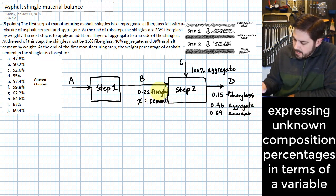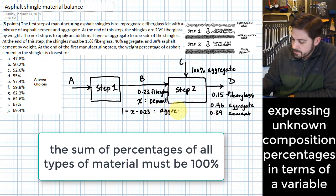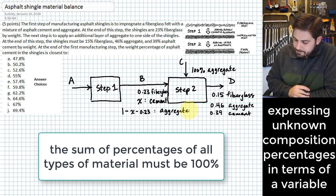And then lastly, we have aggregate that we should have coming into our second step. And what's interesting is that doesn't actually introduce a new variable because we have to have a hundred percent flowing in, this has to sum up to a hundred percent. So for that to work, we need basically one minus X minus 0.23. And this is basically how much aggregate we have coming in in that stream.